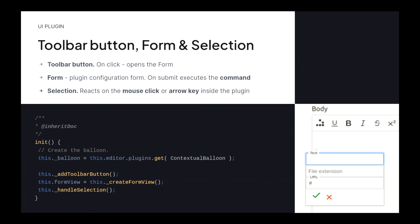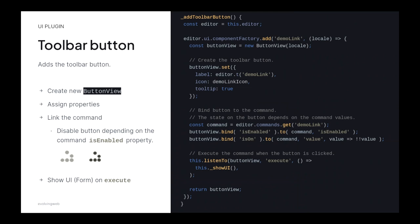That's it for the editing part. Now the UI plugin — it does three things: defines the toolbar button, defines the form called by clicking the toolbar button, and handles the selection. In the init method of the plugin you can see exactly those things. The first thing is attaching the form to the balloon — balloon is the pop-up thing in CKEditor. For the toolbar button, we instantiate the ButtonView object, which is used for anything clickable in CKEditor. We give it a name, an icon (an included SVG file), and we say we want to display a tooltip.